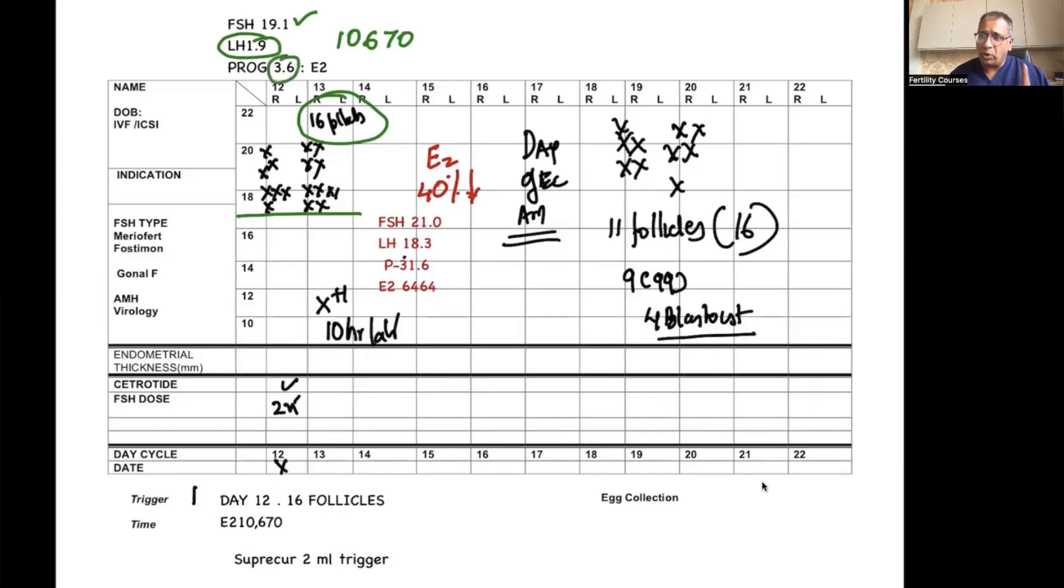So we triggered using the analog trigger, and when we had a look at next day FSH and LH, which I tend to do 10 hours later, you saw an FSH which was high, an LH that had risen, and that indicated a proper response. A progesterone of 31.6, again indicating luteinization, start of luteinization, and that's a key indicator of maturity.